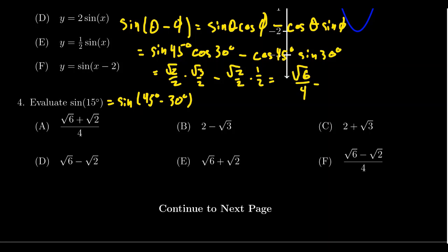Then we subtract from this: the square root of 2 times 1 is the square root of 2, over 4. There's a common denominator of 4, so we write it together and get the square root of 6 minus the square root of 2, all over 4.